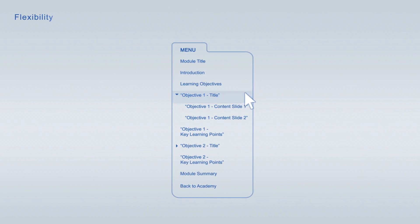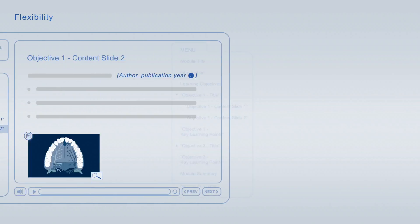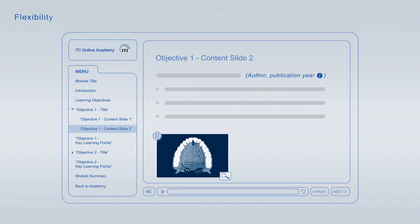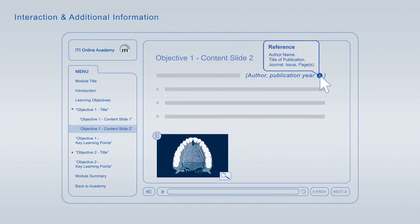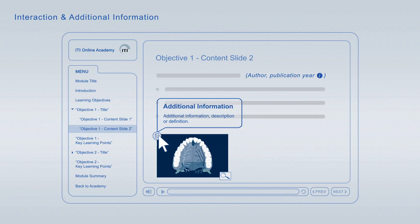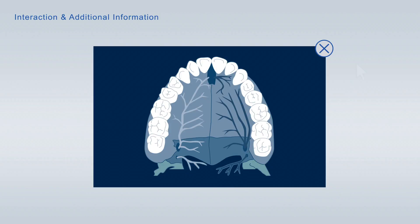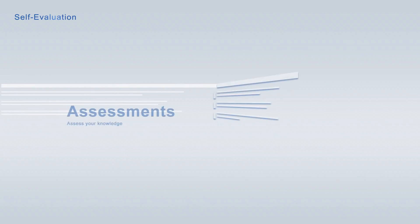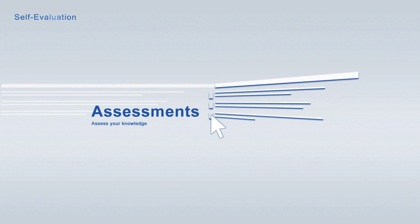You are free to jump from item to item at any time using the module navigation. If you interrupt a viewing session, you can always resume it at a later time, at the exact point where you left off. The slides are enriched with interactive elements. You can expand literature references to get detailed information about the publication. In addition, you can look up definitions of specific terms, get further information about images, and enlarge images to scrutinise them in more detail. Every learning module is paired with a free assessment for continuing self-evaluation, allowing you to track your learning progress at any time.